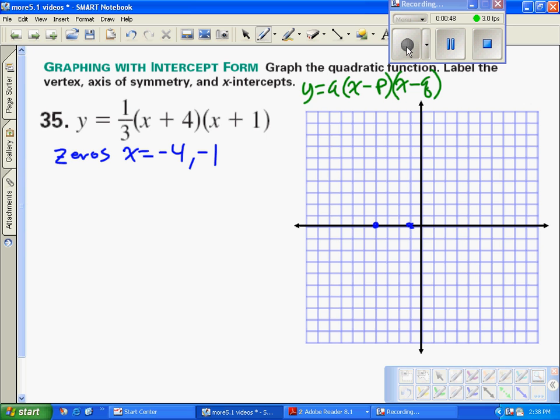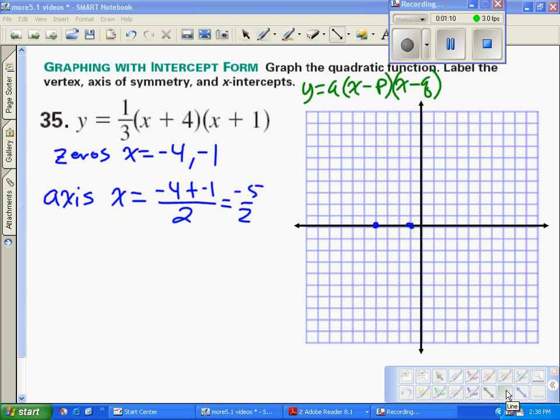My axis of symmetry, x is equal to, and we're going to take the sum of those two intercepts, negative 4 plus negative 1, and we're going to find the midpoint by dividing by 2. So negative 5 divided by 2 is negative 2 and a half. Our axis of symmetry is going to be placed right there at negative 2 and a half.